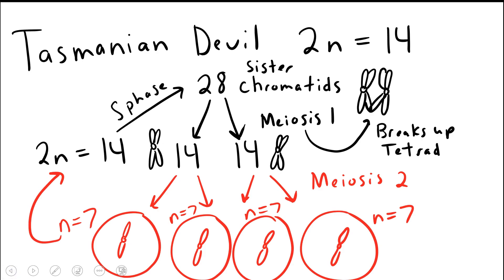Keep in mind the original 2N was 14. So we can check to see that we have correctly divided the genetic material. Tasmanian devil sperm will have an N of seven, meaning there are seven chromosomes in the gamete. And the 2N was originally 14. So we've done this correctly.